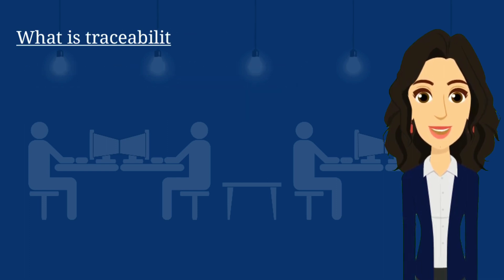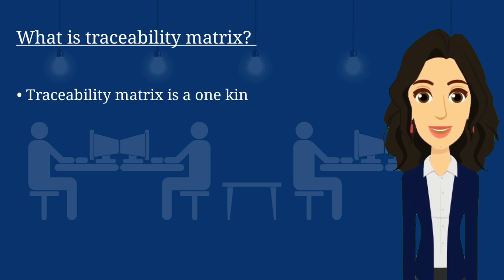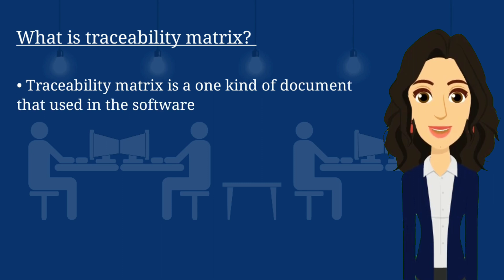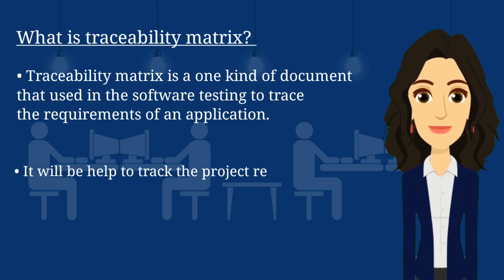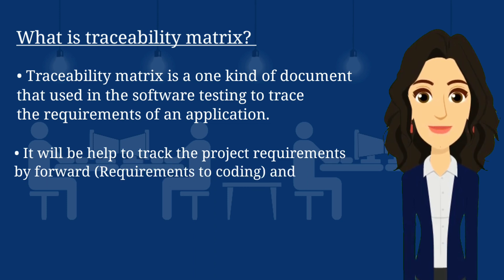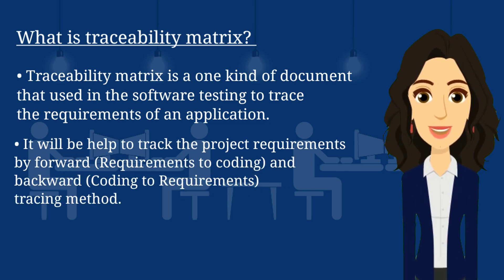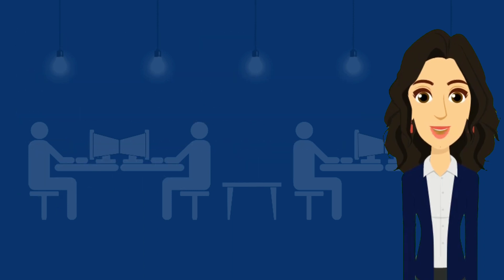They can also ask: what is a traceability matrix? A traceability matrix is a document used in software testing to trace the requirements of an application. It helps track project requirements through forward tracing — from requirements to coding — and backward tracing — from coding back to requirements.